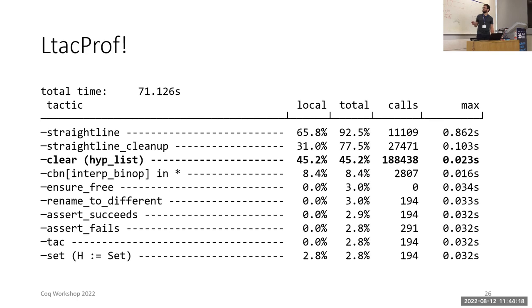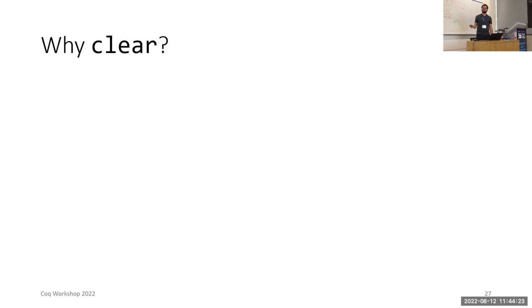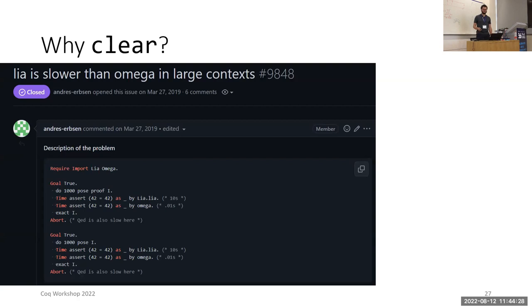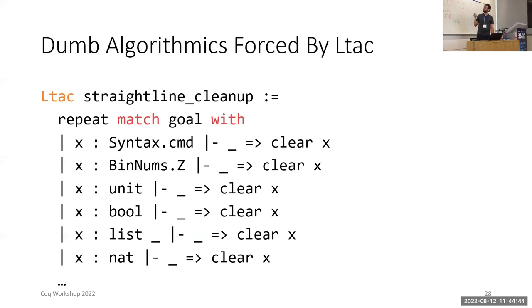The relevant number here that we're looking at is that it is called 188,438 times in our proof. Why are we calling clear so much? The answer is that many tactics are slower in large contexts than in small ones so it does make sense to clear out unused hypotheses. Perhaps not 188,000 times in one proof though.